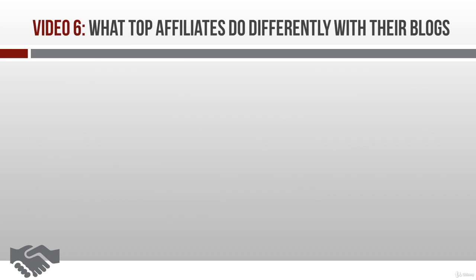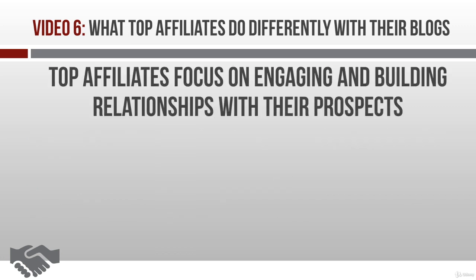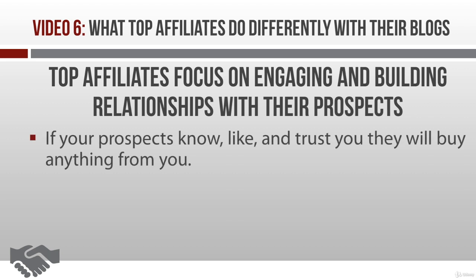The second thing top affiliates do differently is they focus on engaging their audience and building a relationship with them, because people buy from those they know, like, and trust. If you can secure these feelings in your prospect, you're going to be able to sell them anything. The key here is to think infotainment — where you offer information while at the same time entertaining your readers.